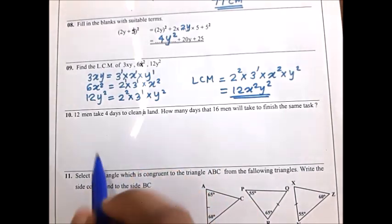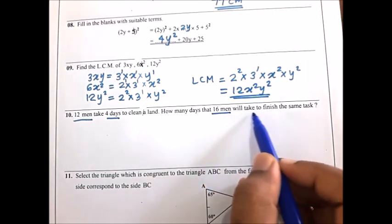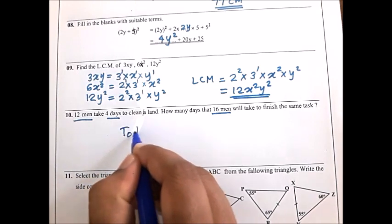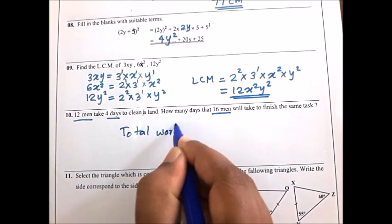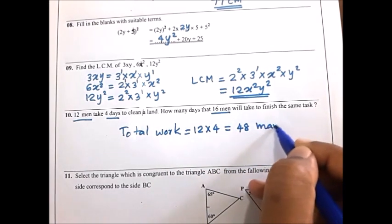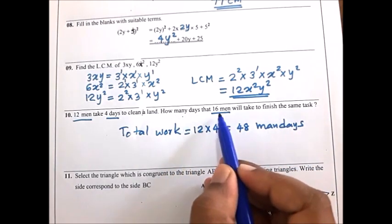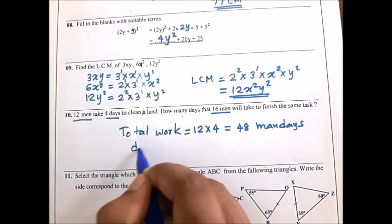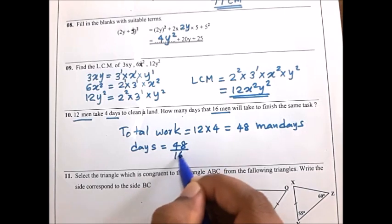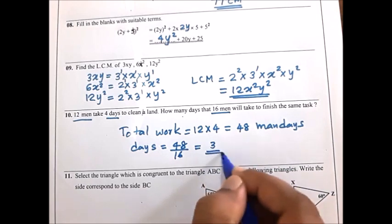Look at the 10th question: 12 men take 4 days to clean a land. How many days will 16 men take to finish the same work? Step 1: find the total work — number of men multiplied by number of days equals 48 man-days. Step 2: divide 48 by 16 to find the number of days for 16 men. The answer is 3 days.